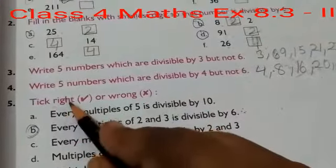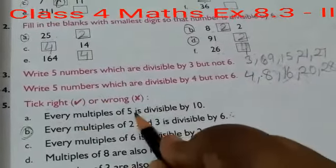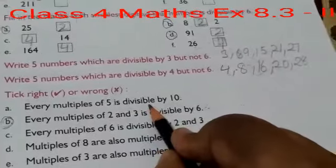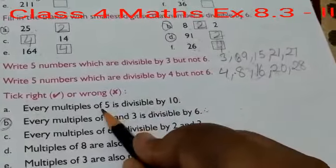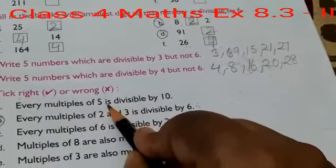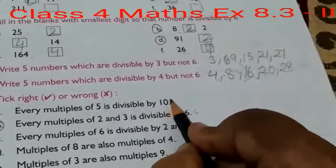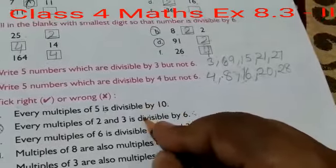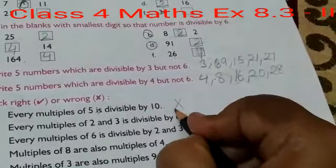Question number 5 is right or wrong. Every multiple of 5 is divisible by 10. No, every multiple of 5 is not divisible by 10. Because which numbers have 1's place or 10's place as 0 or 5 are divisible by 5. But the divisibility rule of 10 is that only numbers with 1's place as 0 are divisible by 10. So it cannot be divisible by 5.